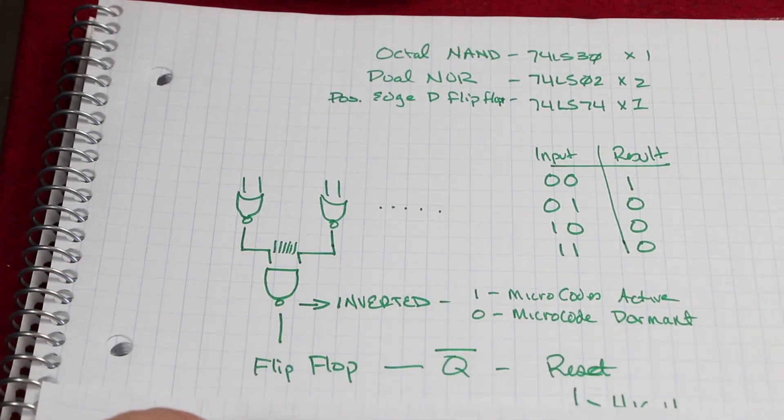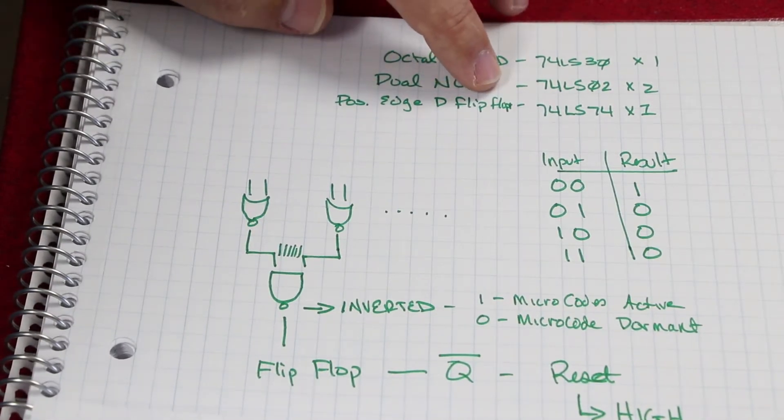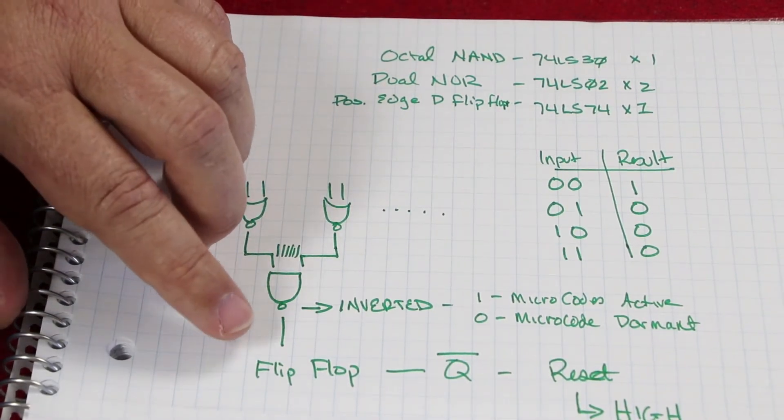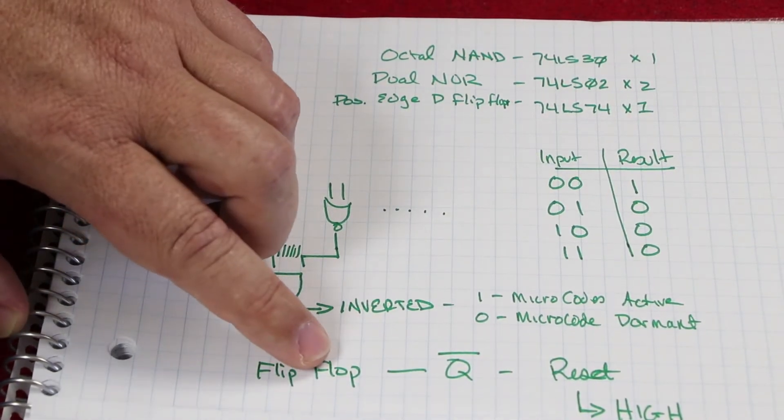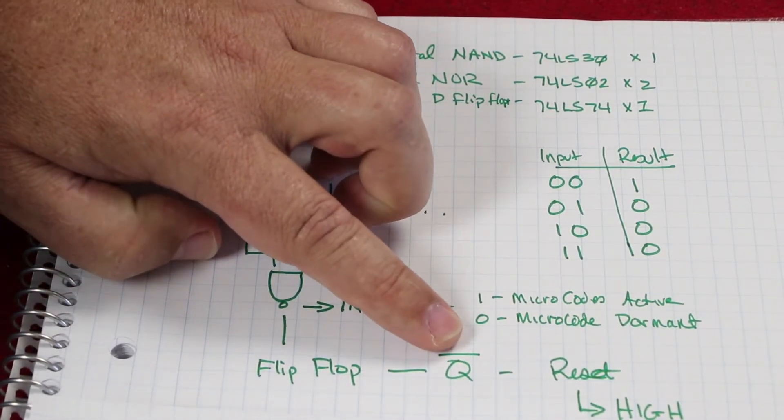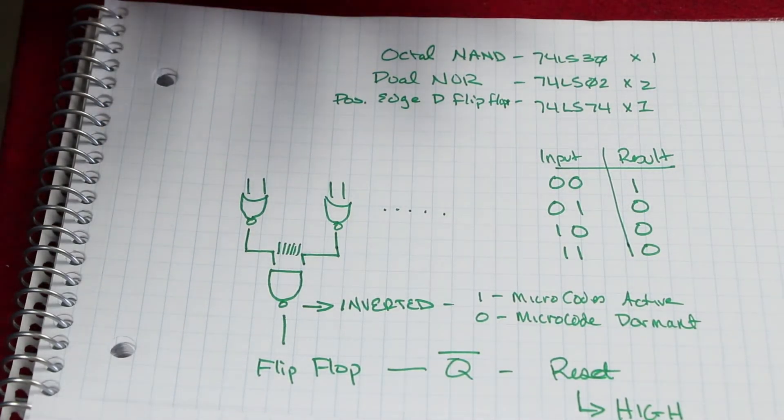So what I did is I inserted a positive edge D flip-flop, 74LS74. I ran the input into the flip-flop, tied it to the clock, and I pulled out because the flip-flop actually takes out your Q value or your inverted Q value.